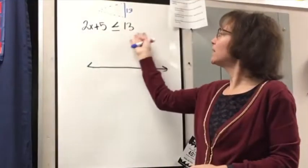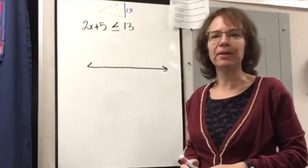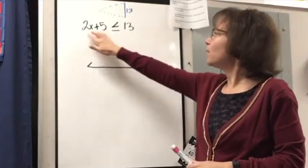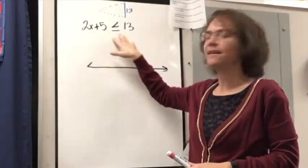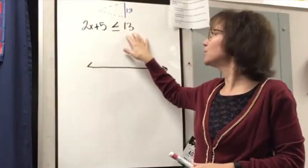So, let's take a look at what inequalities look like when we have a single variable inequality. We want to know when 2x plus 5 is less than or equal to 13.